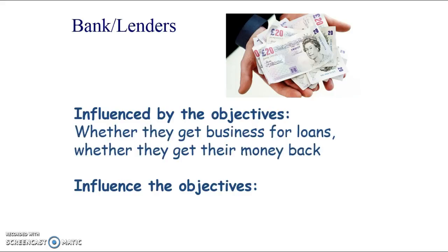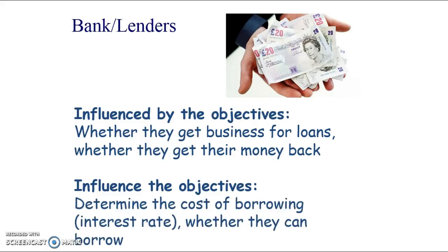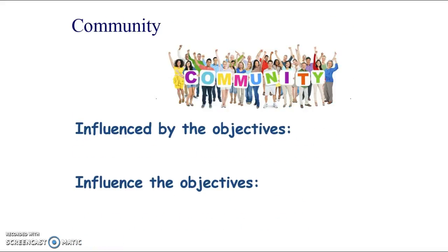Banks and lenders are businesses themselves, influenced by the business because the business taking out loans is how banks make money. If the business goes under with a lot of debt, the bank may not get their money back, affecting the bank's costs and profit. The bank determines whether the business can borrow at all, and sets the interest rate based on how risky the business appears to be.